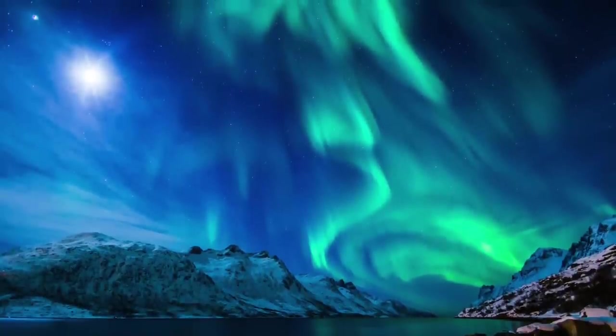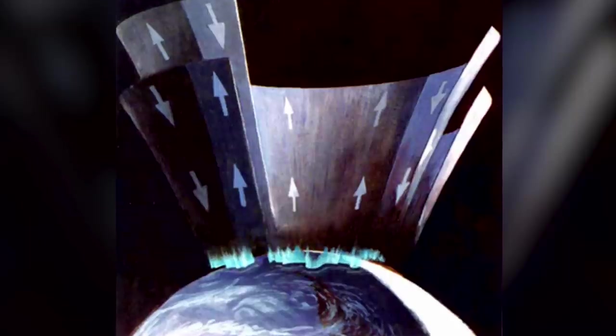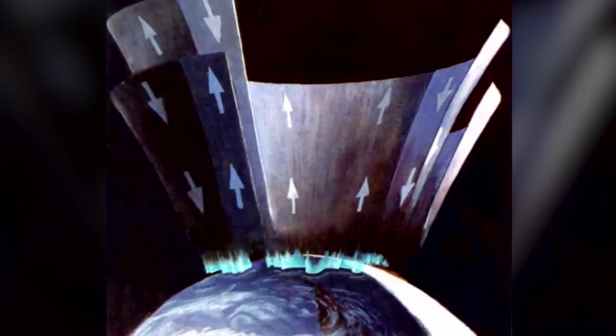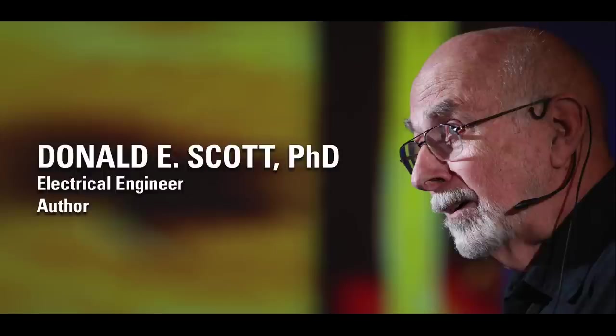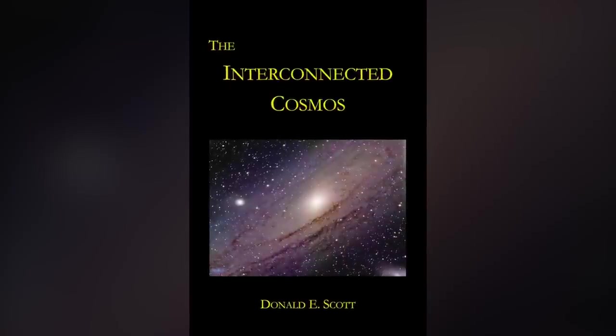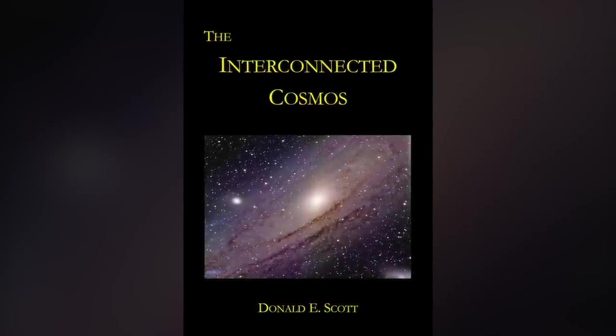Originally discovered by Christian Birkeland early in the 1900s coming from the sun to the earth, they deliver the electric power that lights up our auroras. I wanted to develop an accurate, realistic model of their structure. A complete description is thoroughly detailed in chapters 10 and 11 in my latest book, The Interconnected Cosmos.